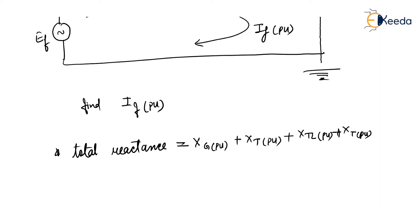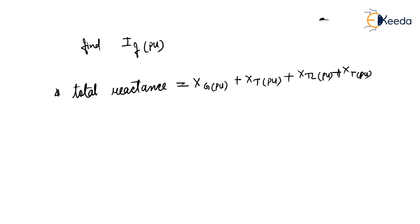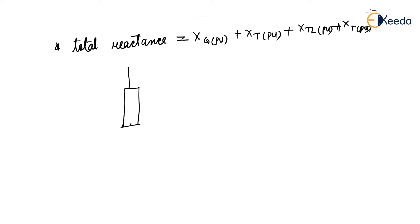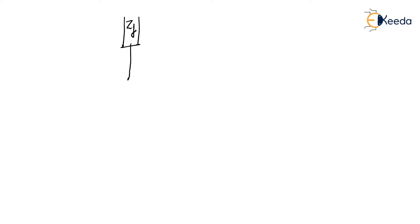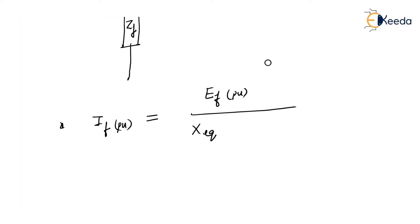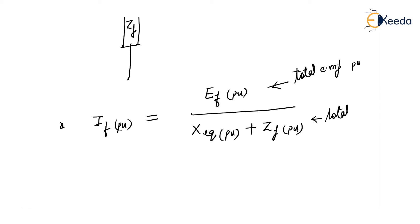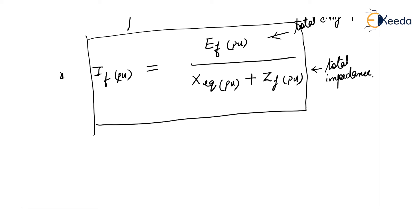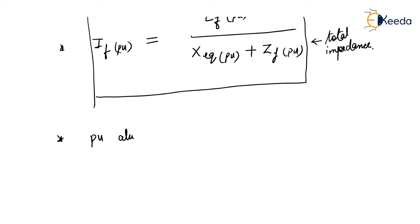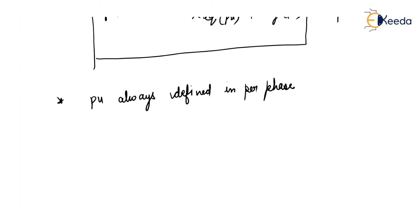When a 3-phase symmetrical fault occurs, some fault impedance ZF may be given — meaning the fault is not directly to ground. If ZF is not given, ZF equals zero. The fault current IF in per unit is equal to EF per unit divided by the total equivalent reactance in per unit plus ZF. Please note that per unit quantities are always defined in per phase, not three-phase.